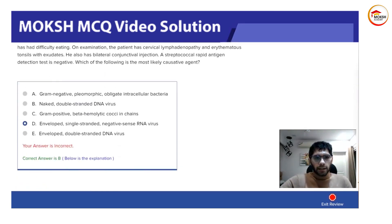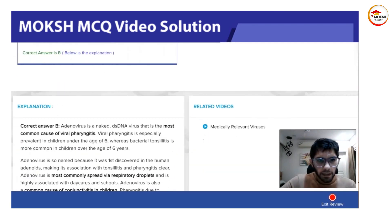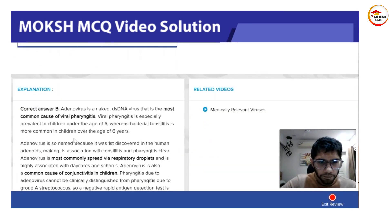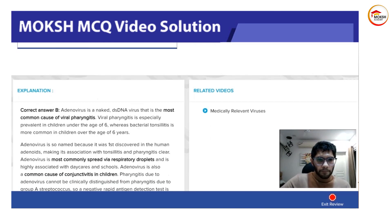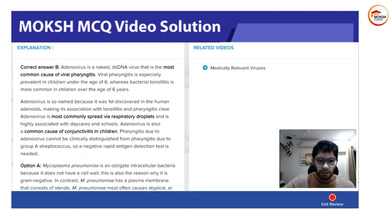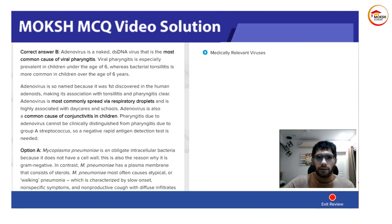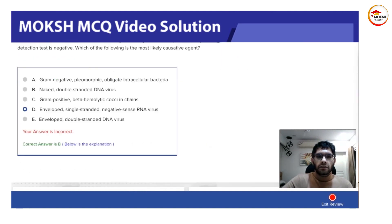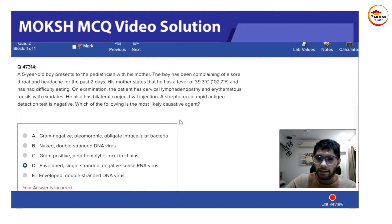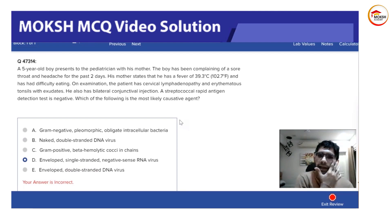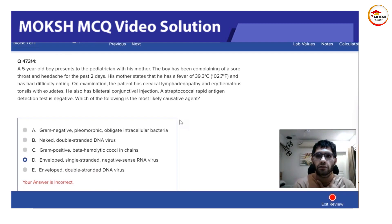Adenovirus is spread by respiratory droplets and is a common cause of conjunctivitis in children. Also remember that it causes hemorrhagic cystitis, so red urine is also seen in these patients.